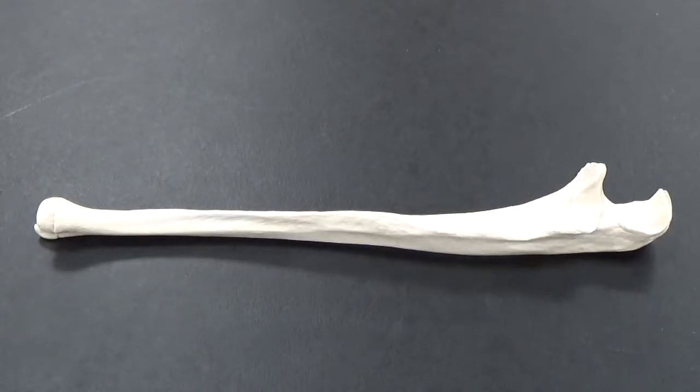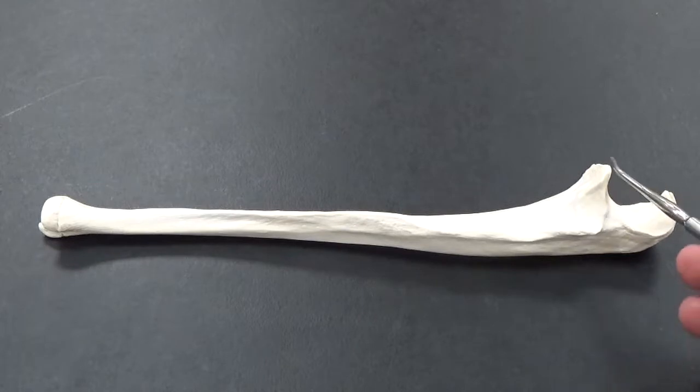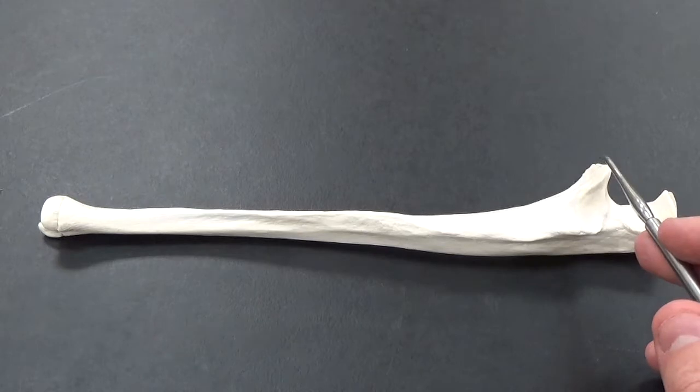Okay, so we're looking at the ulna here. You can always tell the ulna because the ulna has a U. The top part here, you have the olecranon process, and then the other projection is the coronoid process.